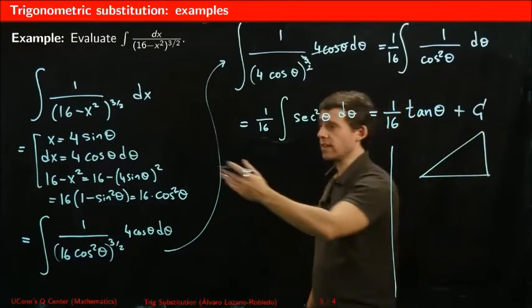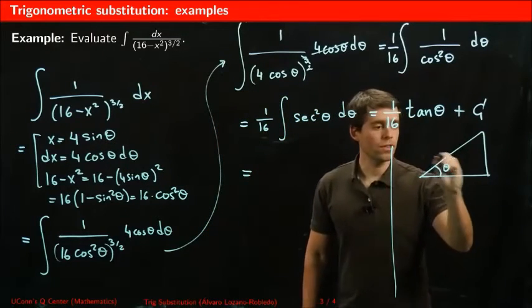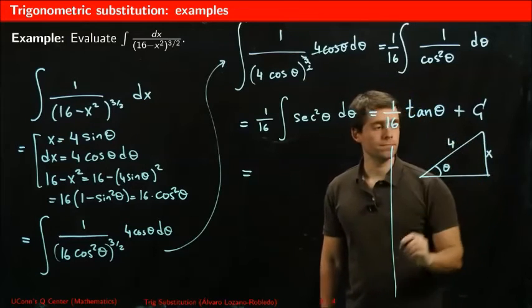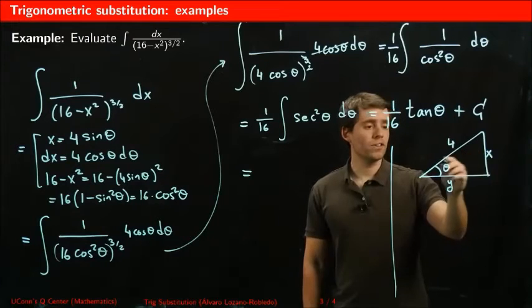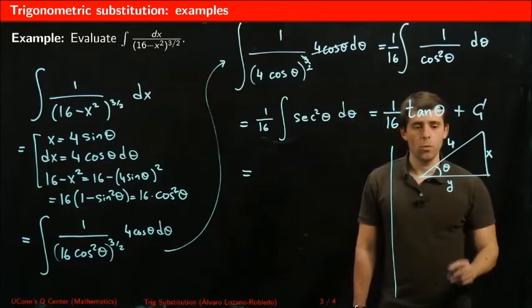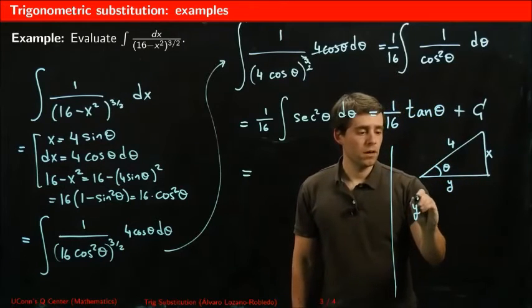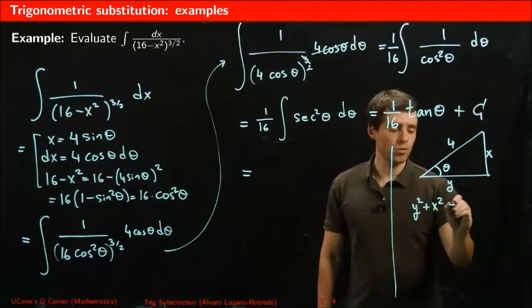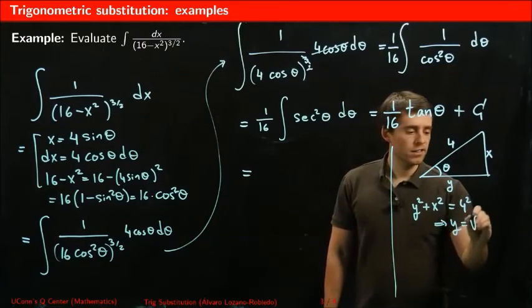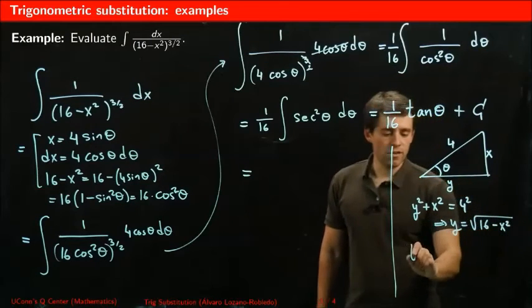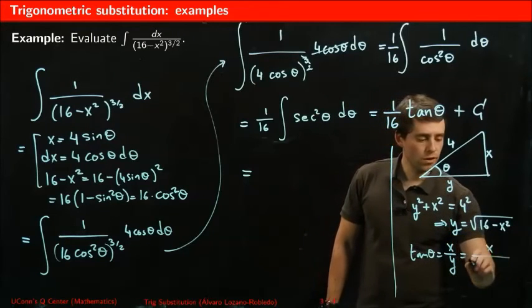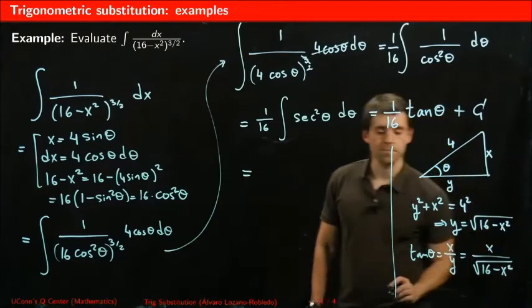So we need an angle theta whose sine is x over 4. And then we're going to need to know the tangent of theta x over y. So we need to know how much is this quantity y. Since Pythagoras tells us that y squared plus x squared equals 4 squared, 16, that tells me that y is the square root of 16 minus x squared. And therefore tangent theta, which is x over y, is x over the square root of 16 minus x squared.